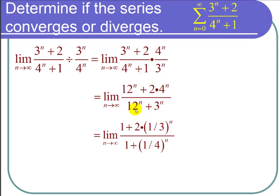For the bottom, 12 to the n over 12 to the n again is 1 and 3 to the n over 12 to the n is 1/4 to the n.